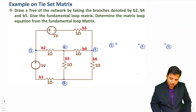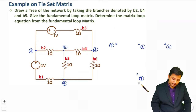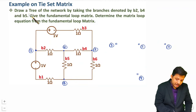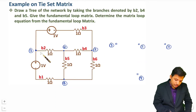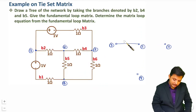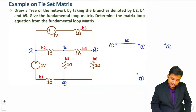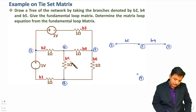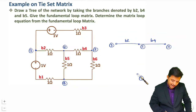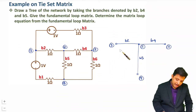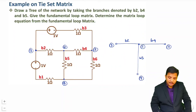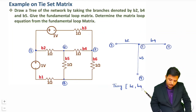You can observe all four nodes considered here. As per the question we need to draw a tree having branches B2, B4, and B5. B2 is between nodes 1 and 2, so I am connecting branch B2 there. B4 is between nodes 2 and 3, so we have B4 here. B5 is between nodes 2 and 4, so we have branch B5. This is the tree, and the branches in the tree are referred to as twigs — B2, B4, and B5.